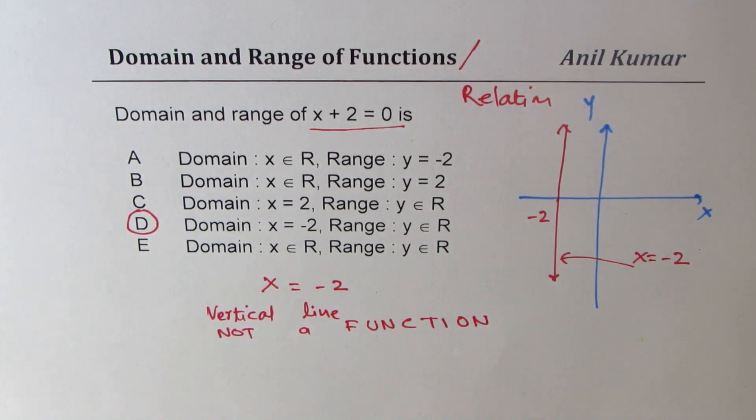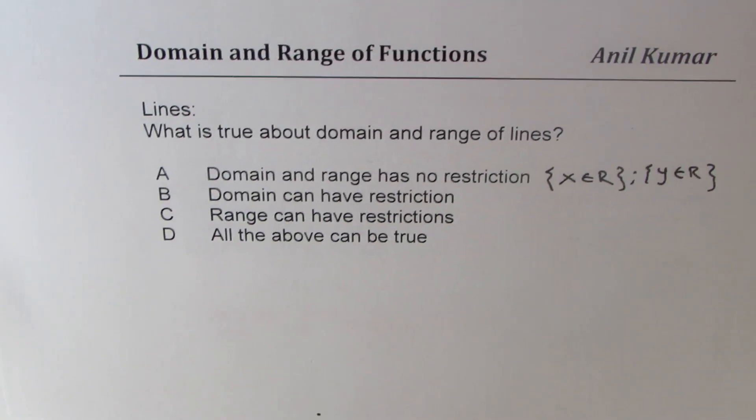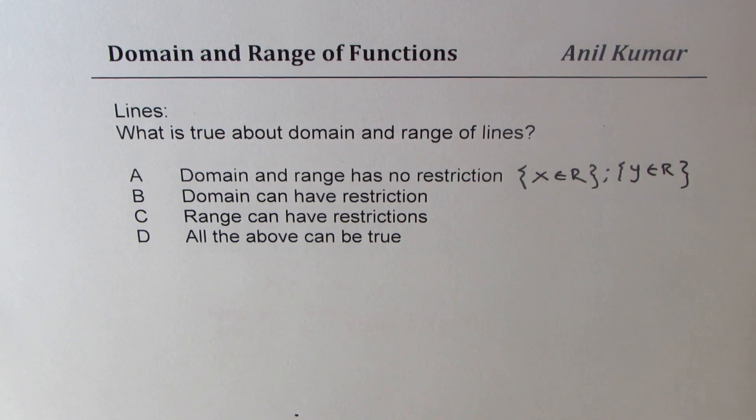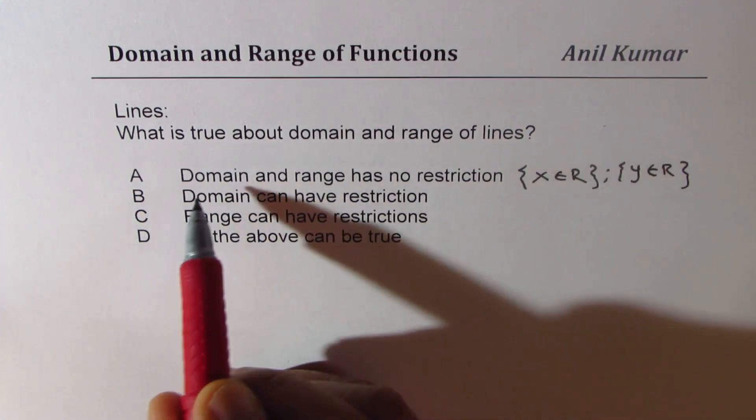So from this, what do we conclude? Getting back to our starting point: what is true about domain and range of lines? We see that for slanting lines we have no restriction on domain and range.